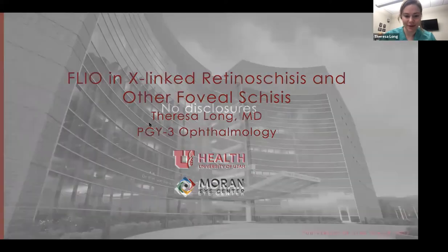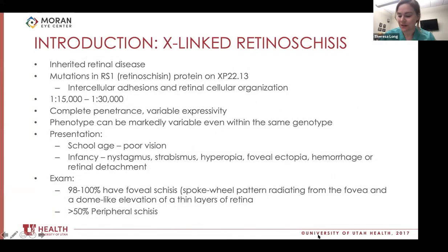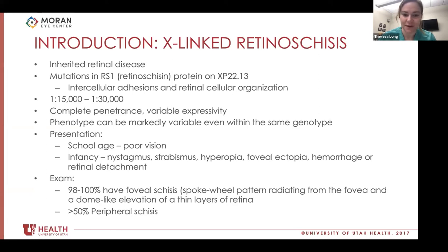I have no disclosures. First I wanted to talk about X-linked retinoschisis. We know that it's an inherited retinal disease with mutations in the RS1 gene, which encodes a protein called retinoschisin, found on the X chromosome. Therefore it shows X-linked inheritance. This protein is involved in intercellular adhesions and retinal cellular organization. The prevalence of the disease is somewhere between one in 15,000 and one in 30,000 individuals. It has complete penetrance and variable expressivity, but the phenotype can be markedly variable even within the same genotype.